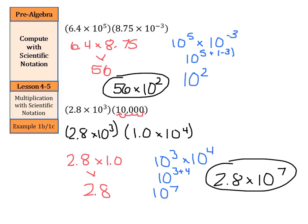In summary, when multiplying with scientific notation: multiply the numbers in front, then deal with your powers of 10 by adding the exponents, and combine them at the end.